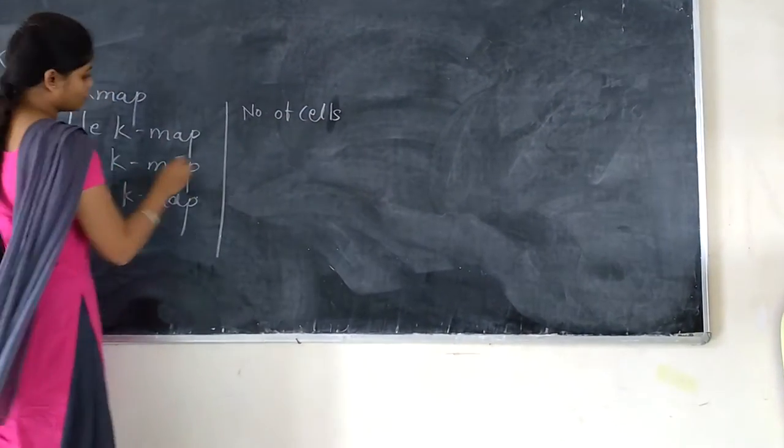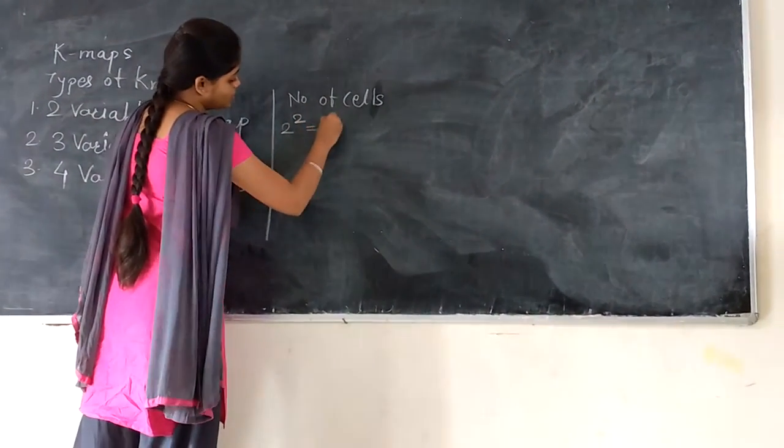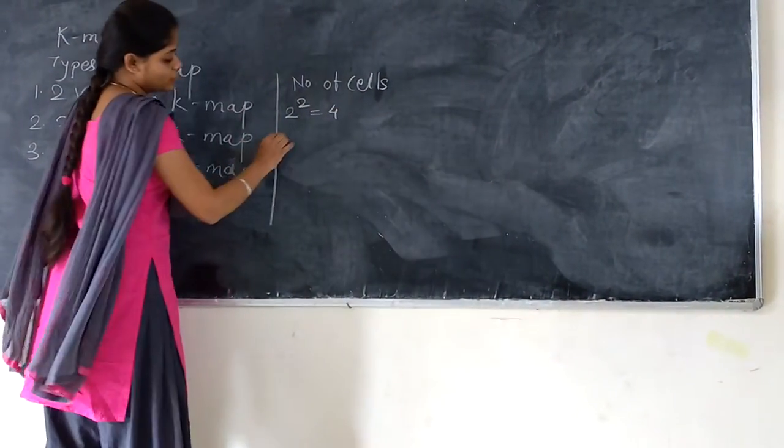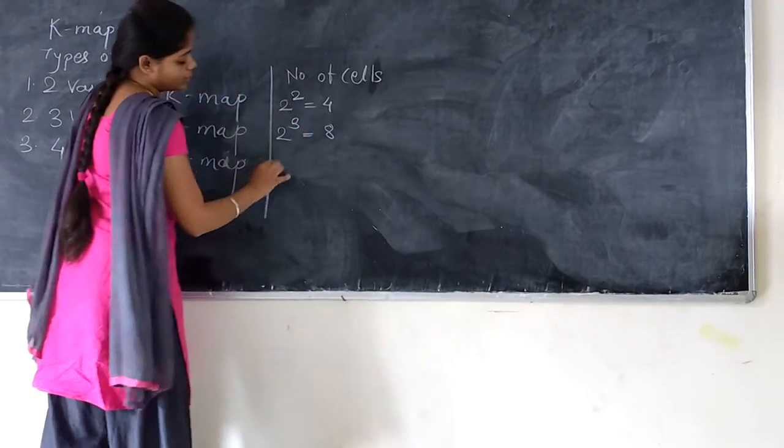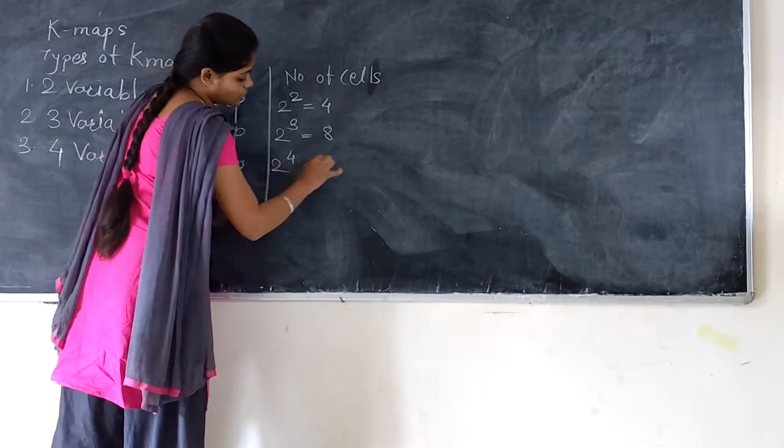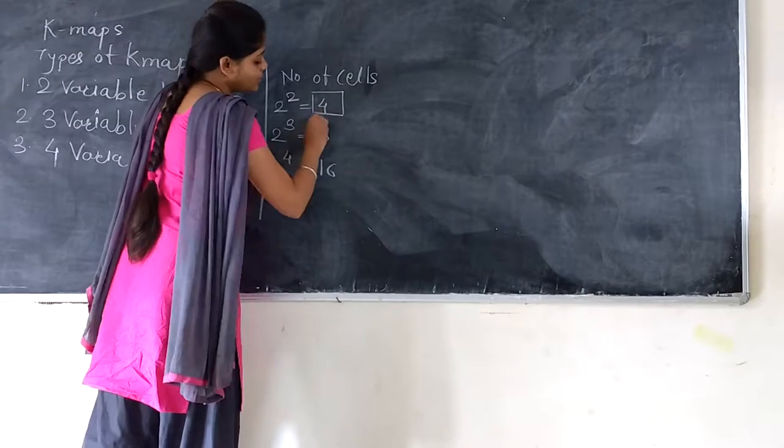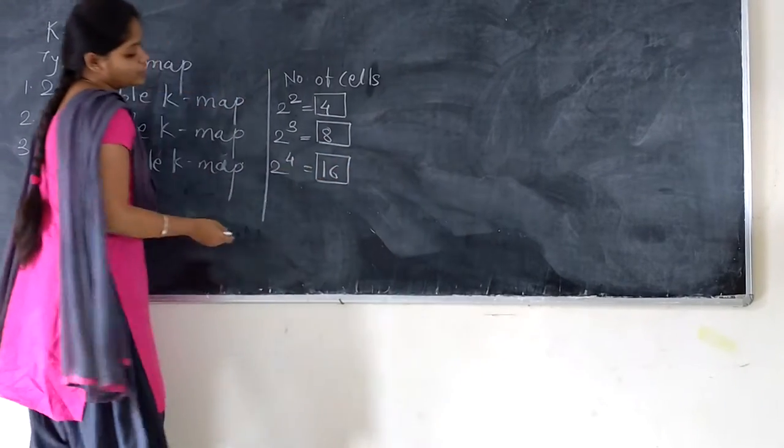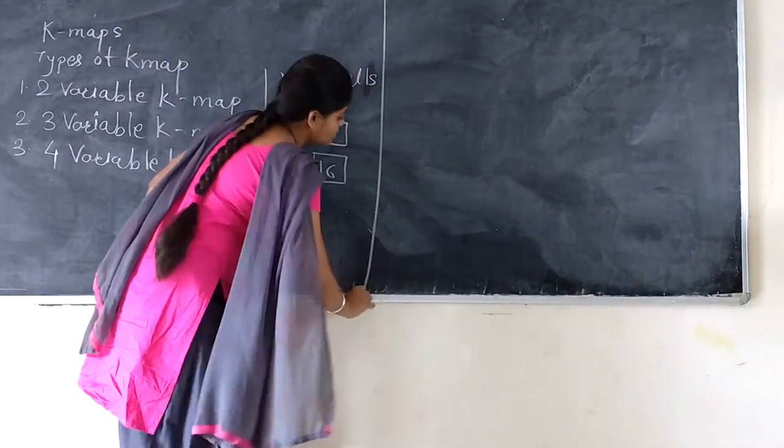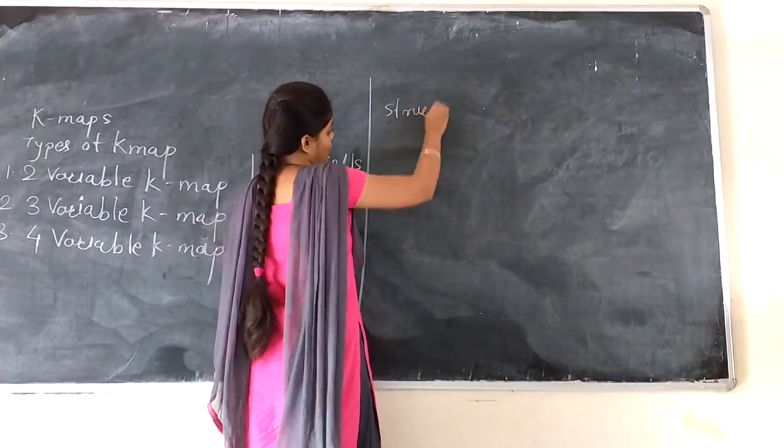Number of cells for two variable K-map: 2^2 equals 4. For three variable K-map: 2^3 equals 8. And for four variable K-map: 2^4 equals 16 cells are required. So the structure of the map.